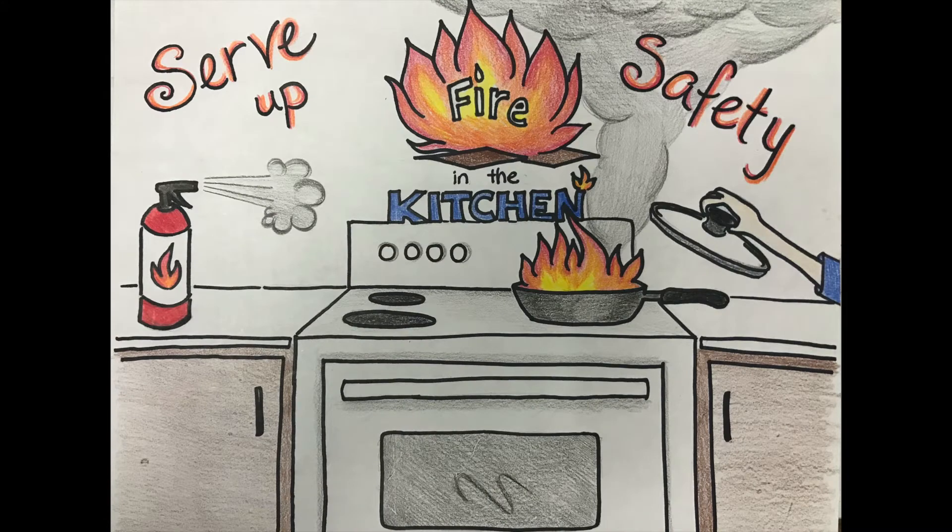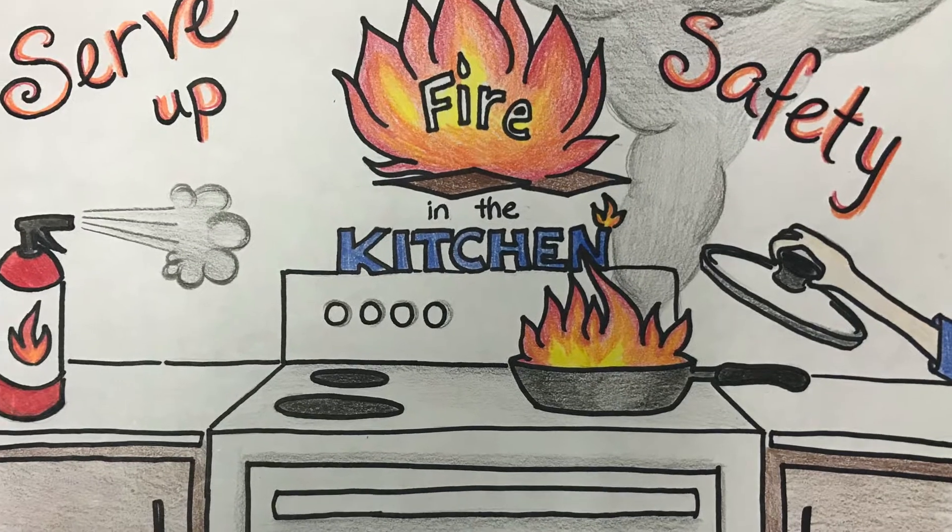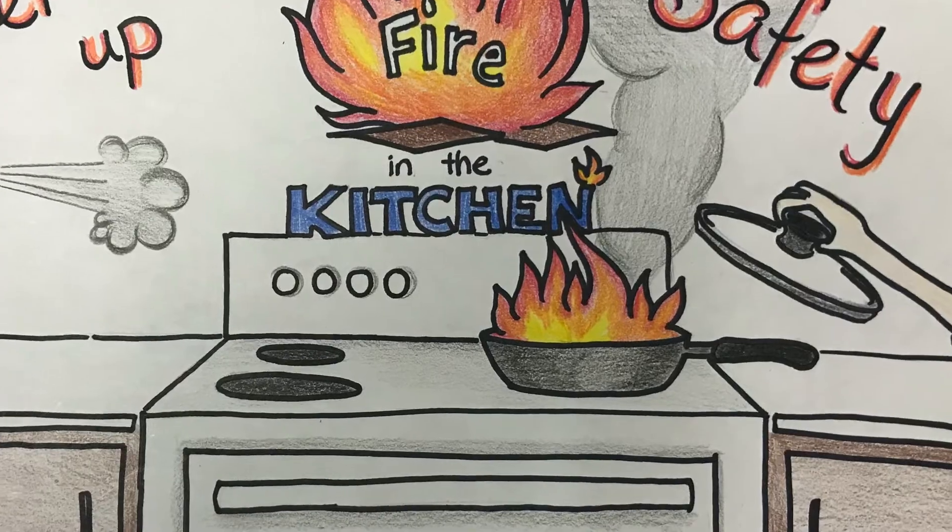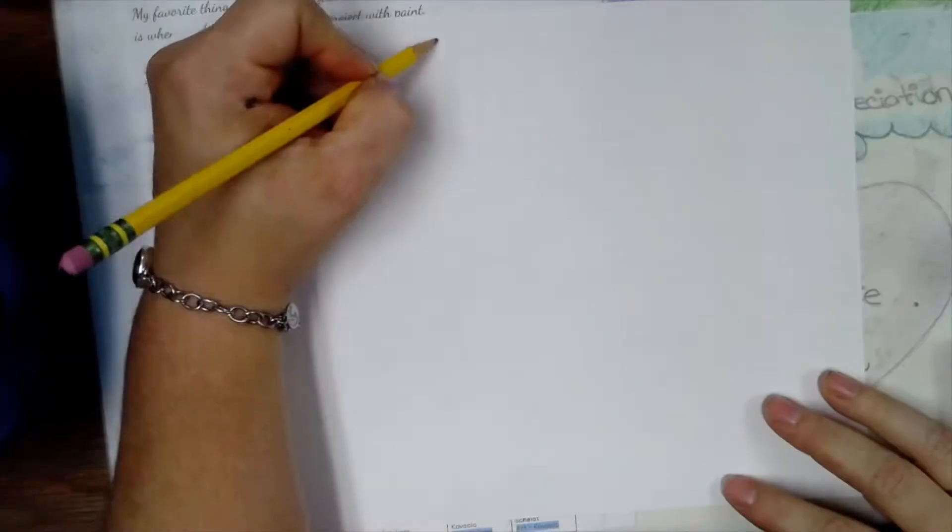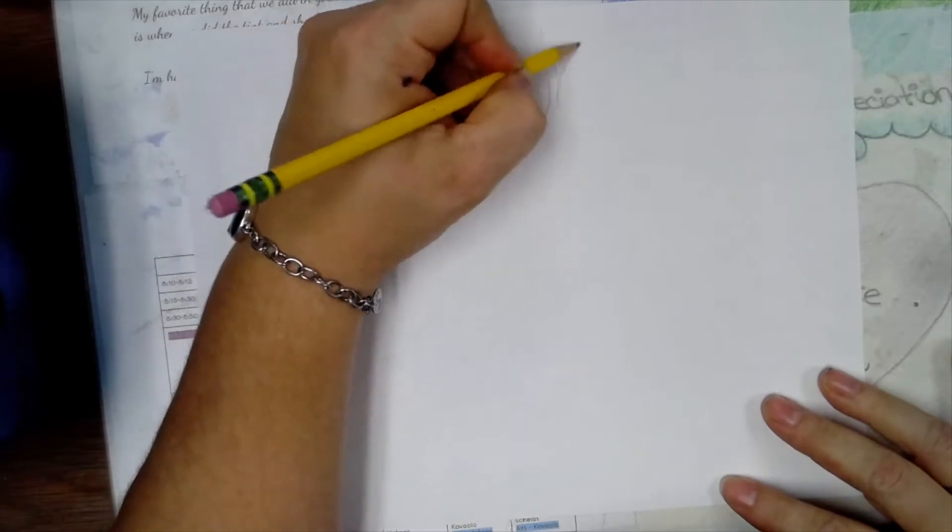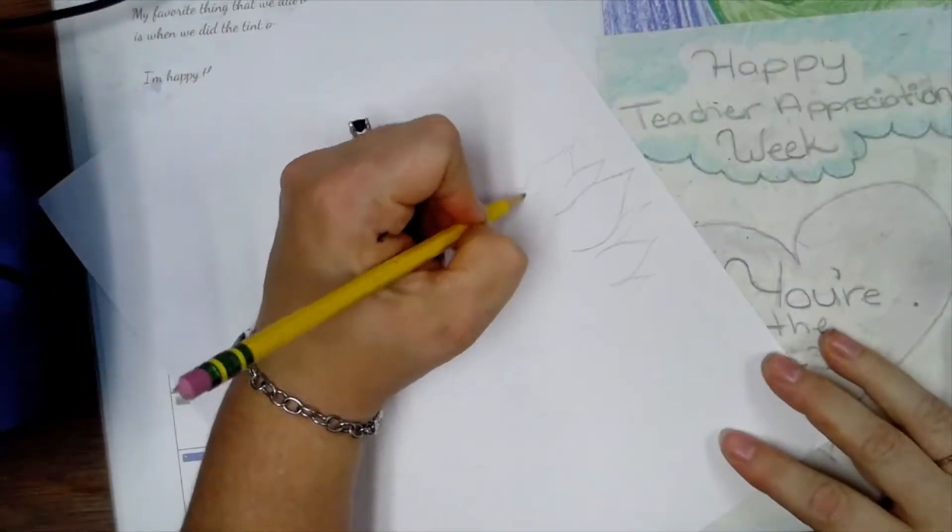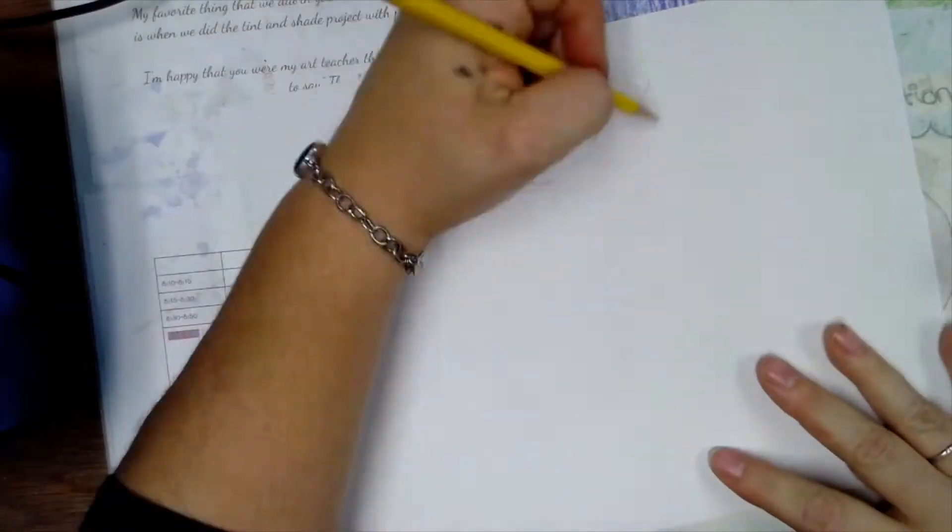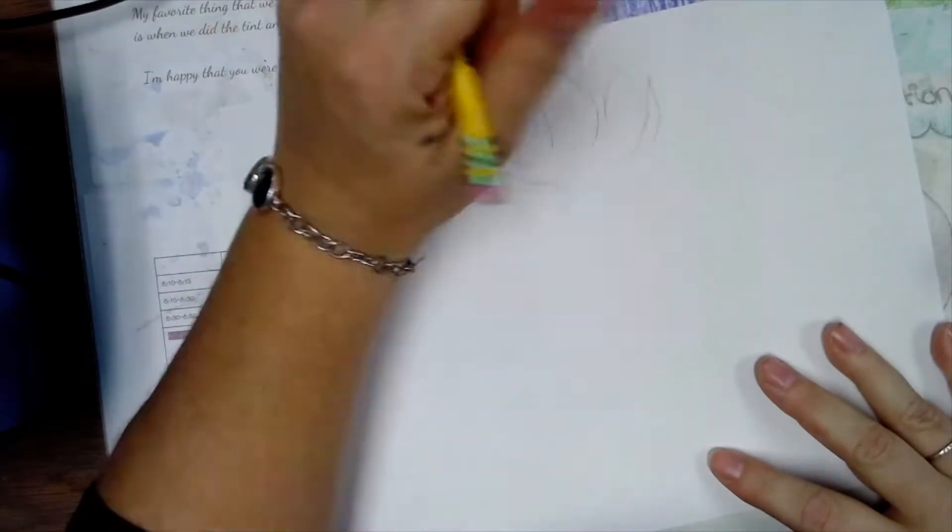All right guys, we're going to talk about making a poster using words and a fire prevention theme today. When you're drawing flames, the easiest way to do it is to create an S-curve and make them pointy on the top.